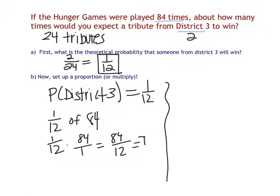Or I could have set up a proportion. So 1 out of every 12 times, we expect someone from District 3 to win. So out of 84 times, how many times would we expect them to win? And so again, I can do 1 times 84 divided by 12, and I end up with x equals 7. So I just want to answer that question of how many times would we expect them to win? We would expect them to win 7 times.